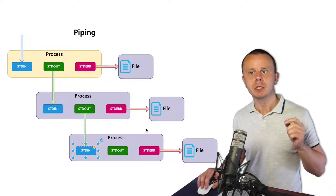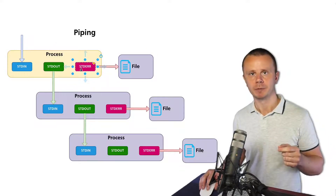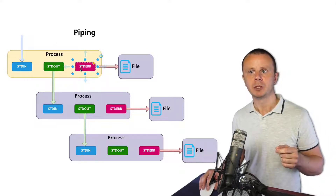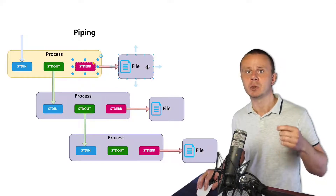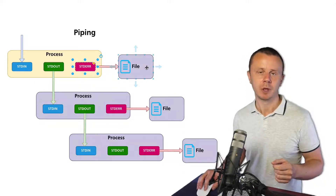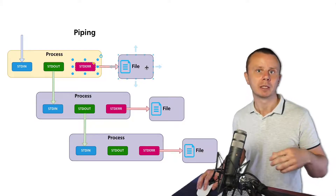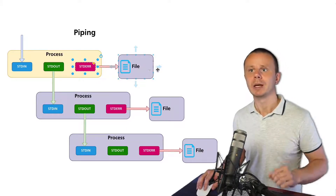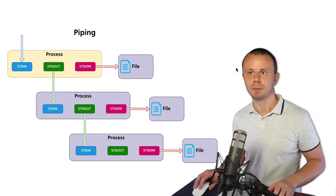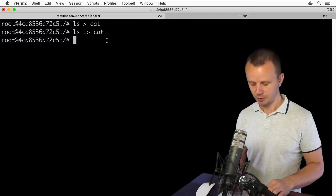Please notice that the stderr data stream is not piped. You are able to write it to a file, the same as we did in previous examples, or you can still print it to the terminal, which is the default action. Let's try using piping in this example with ls and cut.